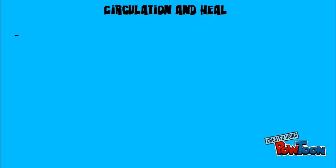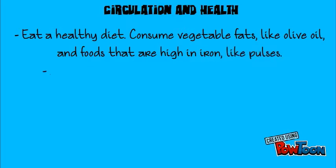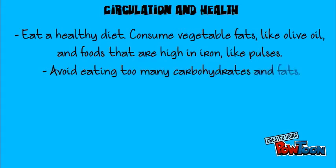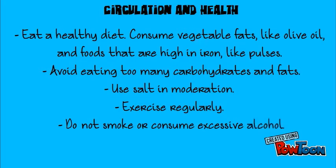Circulation and health. Eat a healthy diet. Consume vegetable fats like olive oil, and fruits that are high in iron like pulses. Avoid eating too many carbohydrates and fats. Use salt in moderation. Exercise regularly. And do not smoke or consume excessive alcohol.